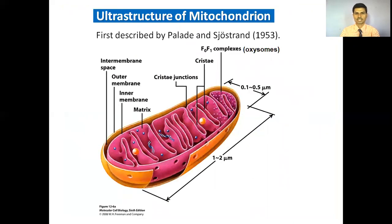Let's move toward the ultrastructure of mitochondrion, also called as the powerhouse of cells. The mitochondrion was first described by scientists Pallade and Sjöstrand in 1953. In the figure we can see the mitochondrion is composed of two membranes — it shows an outer membrane and an inner membrane.